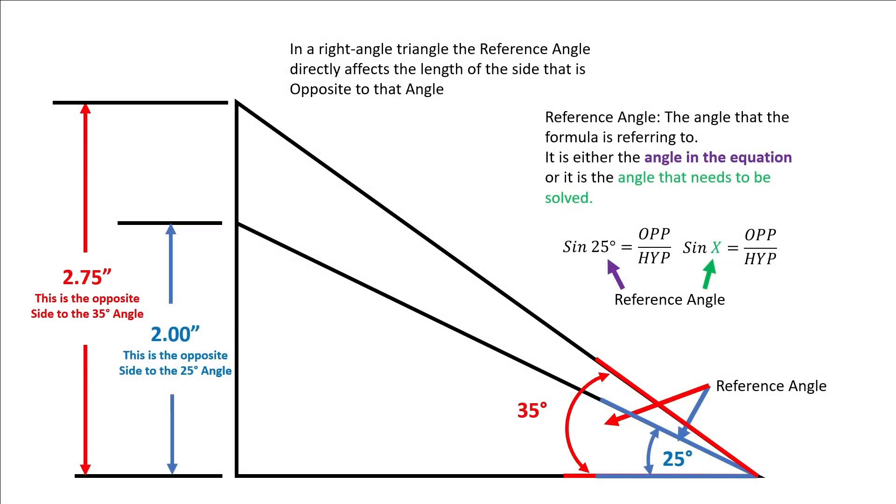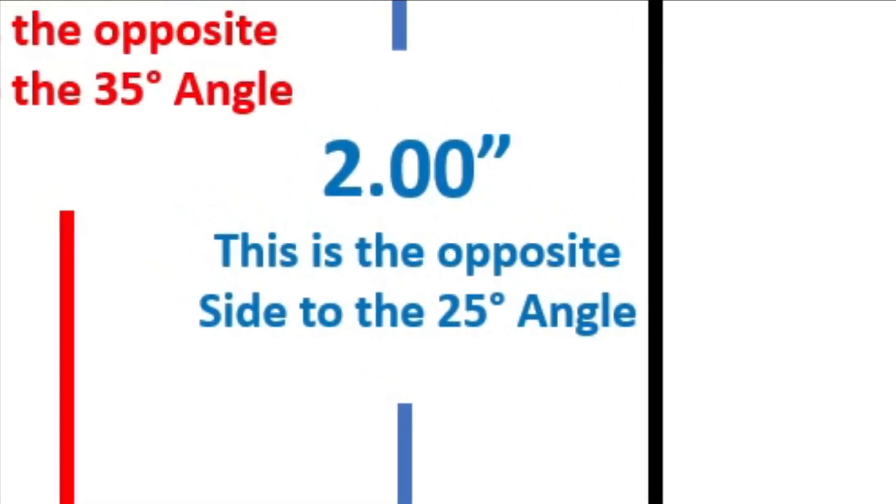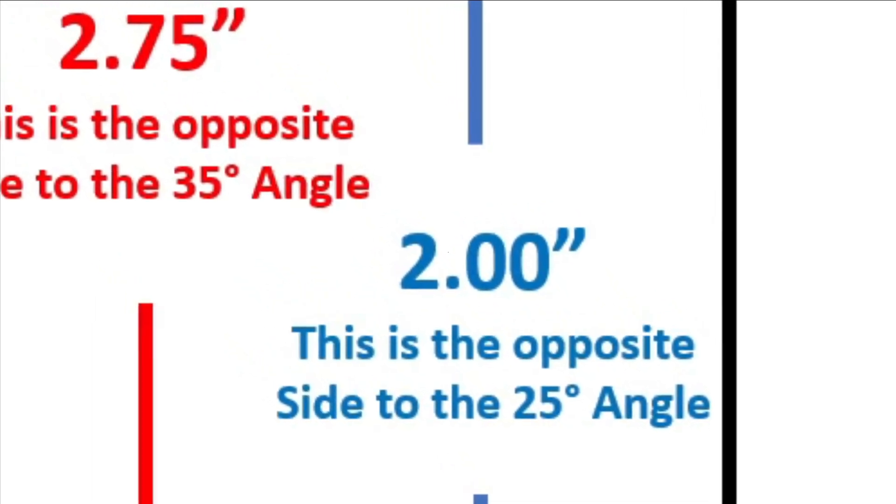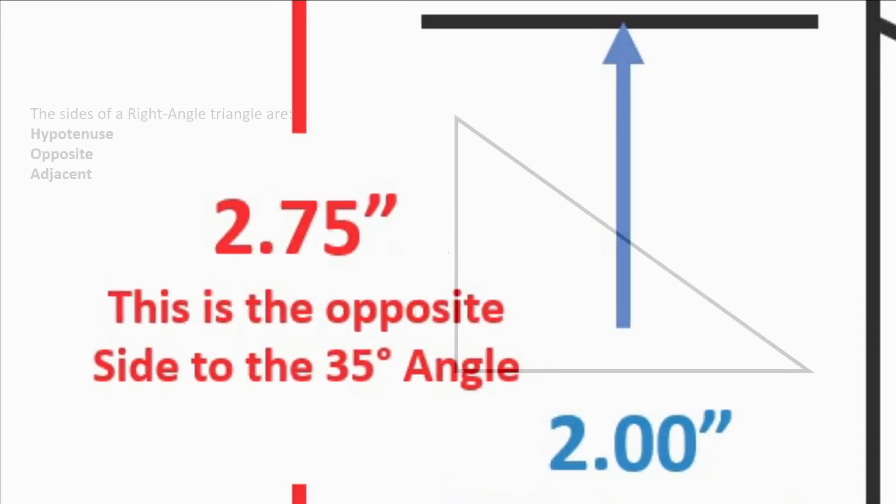As that reference angle changes from 25 degrees to 35 degrees, notice the effect that it has on the opposite side of the triangle. When the angle increases by 10 degrees, the length of the opposite side increases by three quarters of an inch.